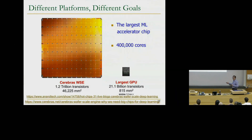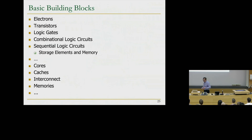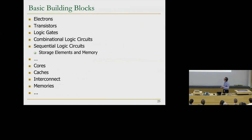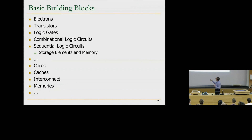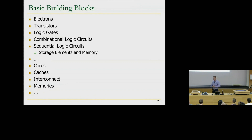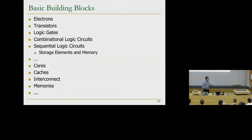What are those basic building blocks? These are what we're going to learn. Hopefully you'll learn about electrons — but we're not going to cover electrons. We're going to start with transistors, and then build logic gates, and then build combinational and sequential logic circuits. Sequential logic circuits are the ones that provide storage elements and memory so that you can remember. Combinational logic doesn't remember — it just computes. We're going to build other building blocks on top of these: cores, caches, interconnect, and memories. We're going to talk about how to interconnect these things so that we can do computations in much faster ways.